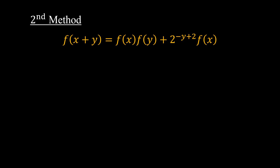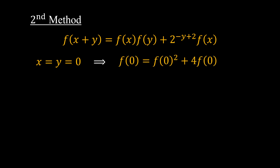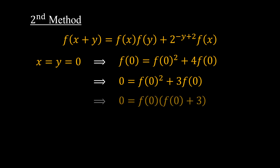In the second method, we substitute x = y = 0 into the original functional equation. We get f(0) = f(0)² + 4·f(0). Subtracting f(0) from both sides and factoring, we find f(0) = 0 or f(0) = −3.